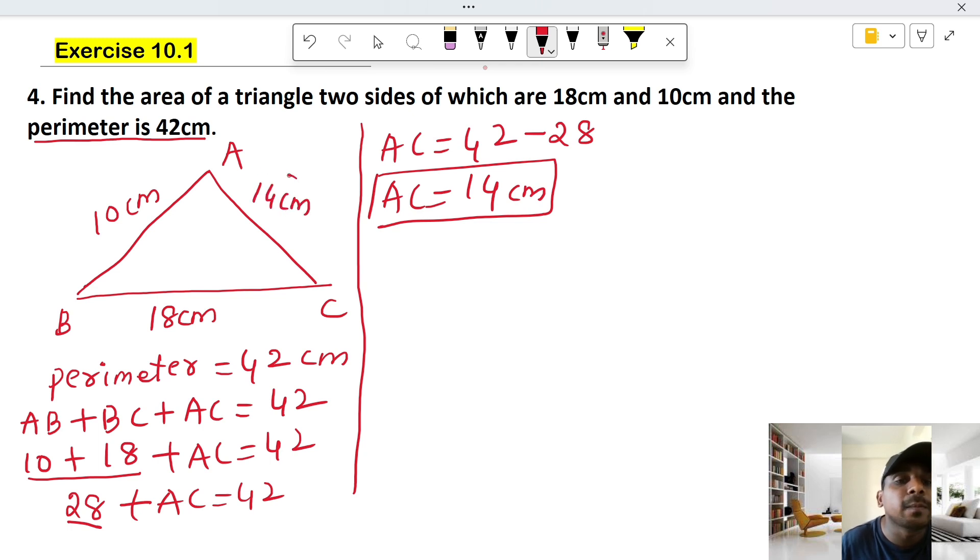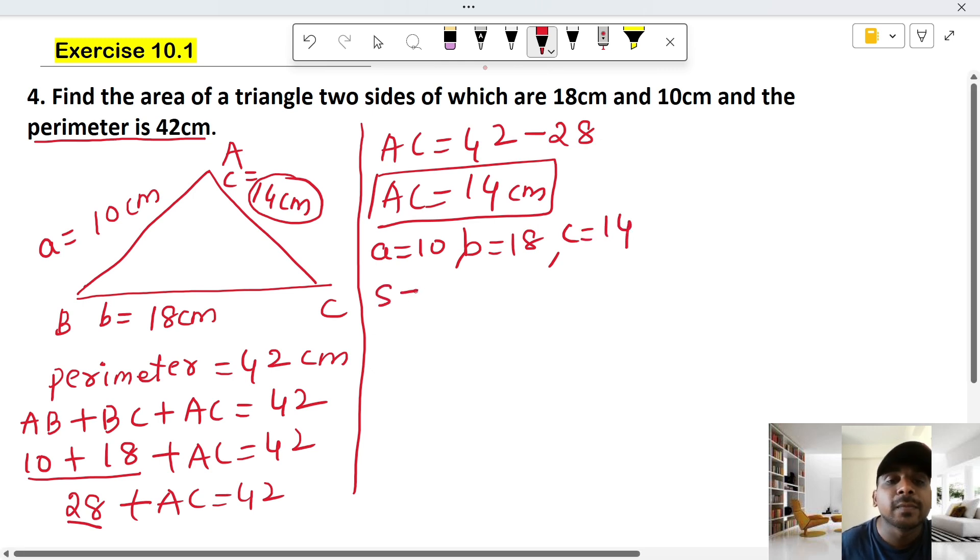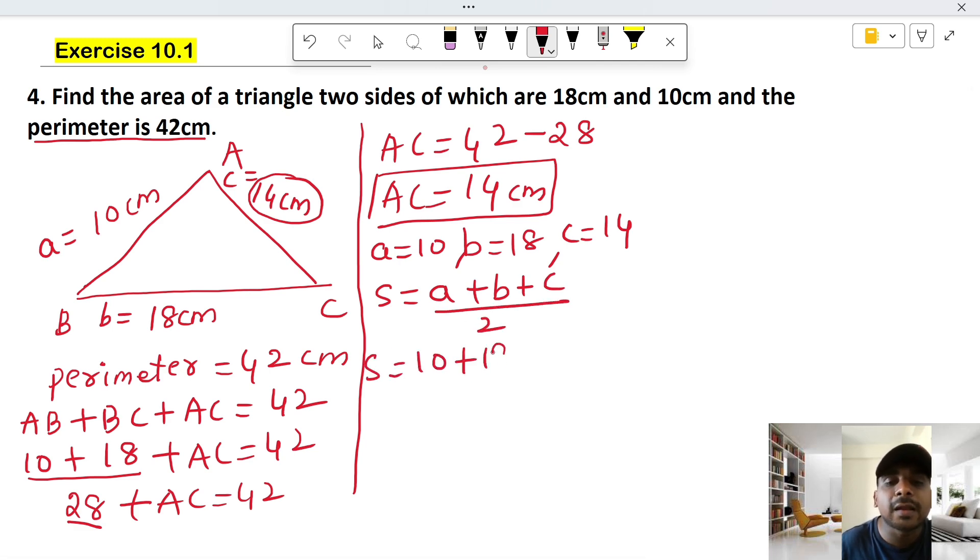If A is 10, B is 18, and C is 14, we calculate S equals A plus B plus C divided by 2. S equals 10 plus 18 plus 14 divided by 2. This gives us 42 divided by 2, which equals 21.